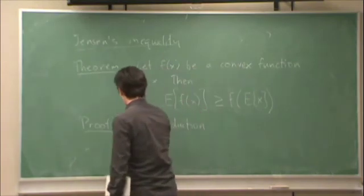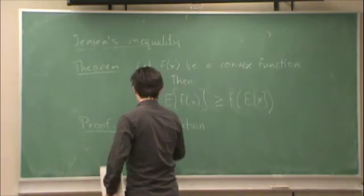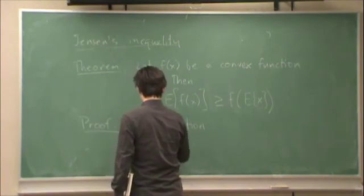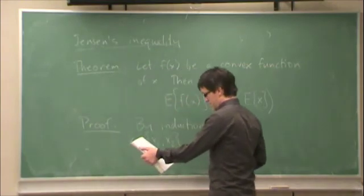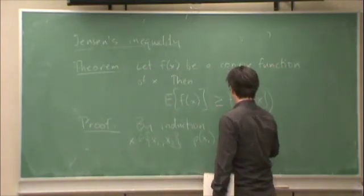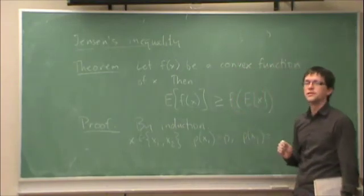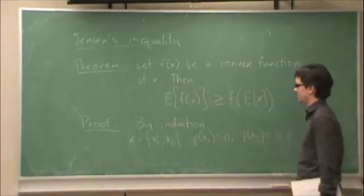Okay, so let's say x can take values x1 and x2, the probability of x1 is p, and the probability of x2 is what must the probability of x2 be? 1 minus p. There's only two possibilities, and the probabilities must sum to one.